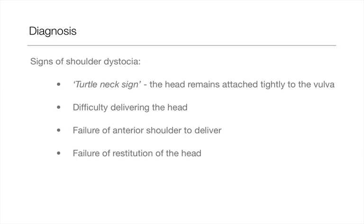The signs of shoulder dystocia: it is often termed a turtle-neck sign where the head remains tightly attached to the vulva. If there is any difficulty in delivering the head, or the failure of the anterior shoulder to deliver, or the failure of restitution of the head, everyone on labour ward becomes alerted that this may be a case of shoulder dystocia.